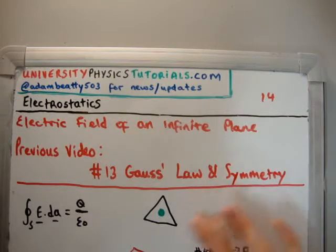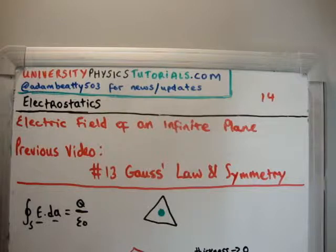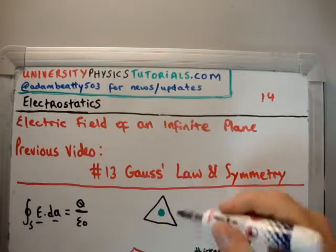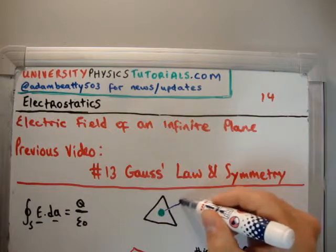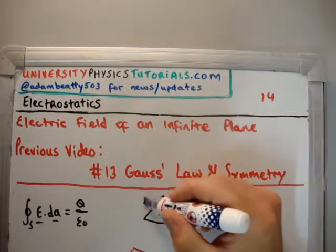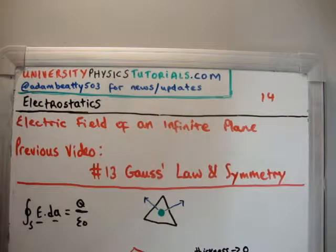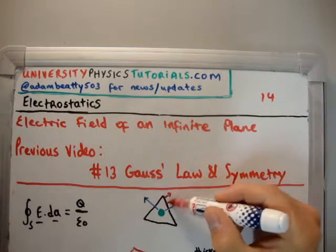So how do we get E and A to point in the same direction? Well, you pick a smart Gaussian surface. So we know, for example, that the electric field of a spherical distribution points radially like this. That means that the normal element of our triangle is going to be in this direction, right? It's going to be like this.